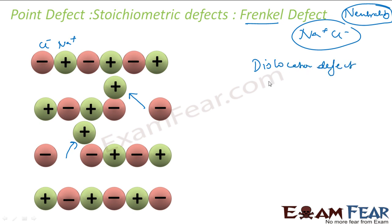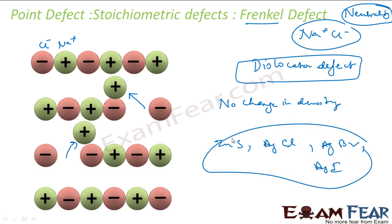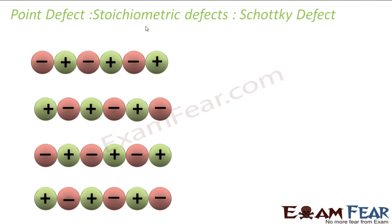It's also called dislocation defect because there is nothing missing, just some dislocation happening. Nothing is missing. The whole system is intact. The number of atoms that should be in a crystal is same, only thing is they are dislocated. So density is not changed. There is no change in density. Examples are ZnS, AgCl, AgBr silver bromide, silver fluoride, silver iodide. All these show this kind of defect. This is generally shown when there's a difference in size. Since the smaller ion moves, there has to be a difference in size. One has to be smaller. So difference in ion size favors this kind of defect. The smaller ones dislocate.